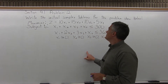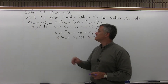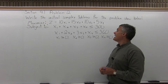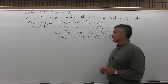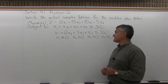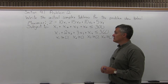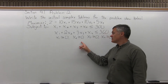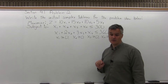Write the initial simplex tableau for the problem shown below. We have a problem that says maximize z equals 10x1 plus 15x2 plus 10x3 plus 5x4, subject to x1 plus x2 plus x3 plus x4 is less than or equal to 300, x1 plus 2x2 plus 3x3 plus x4 is less than or equal to 360, and x1, x2, x3, x4 are all greater than or equal to 0.